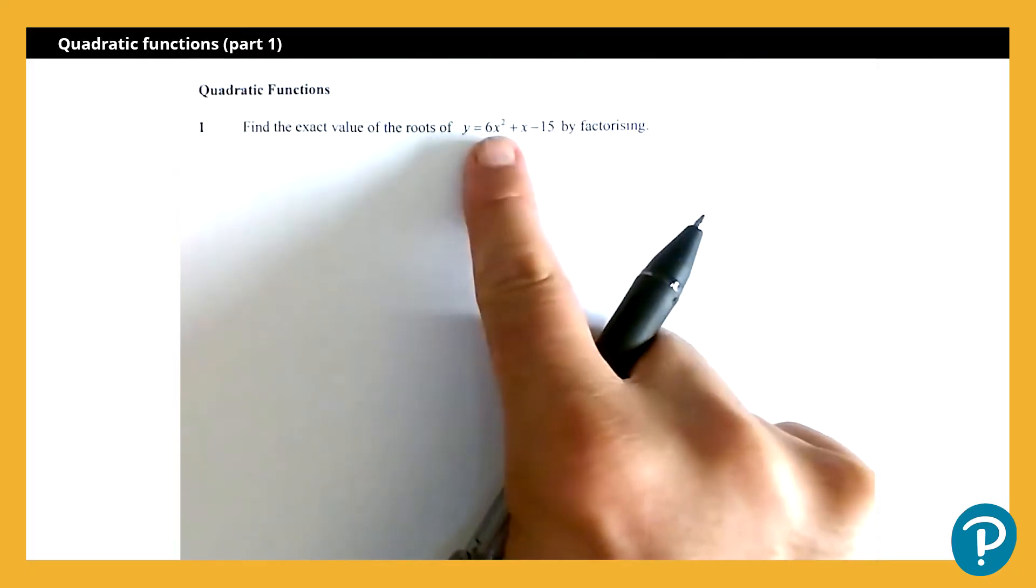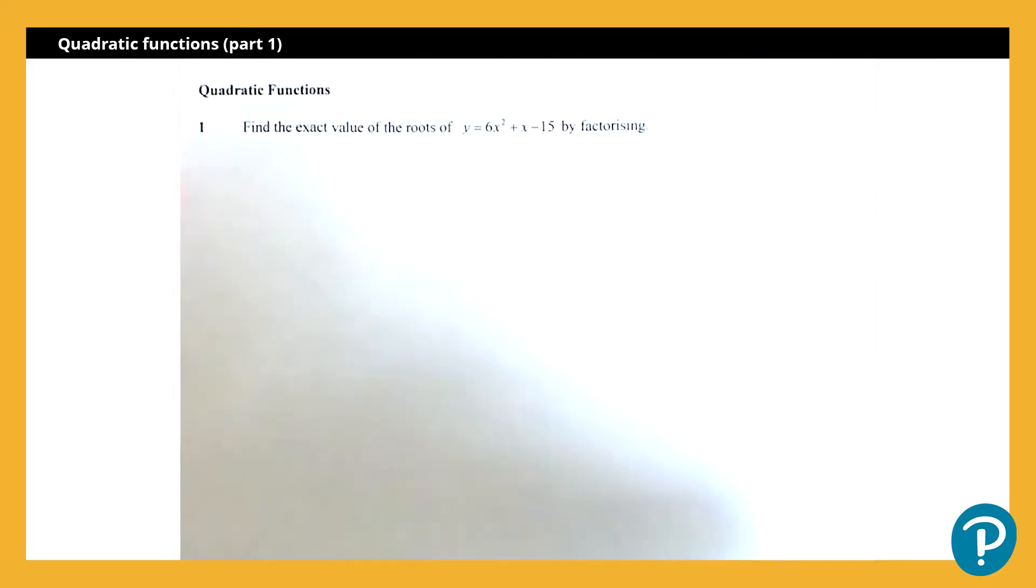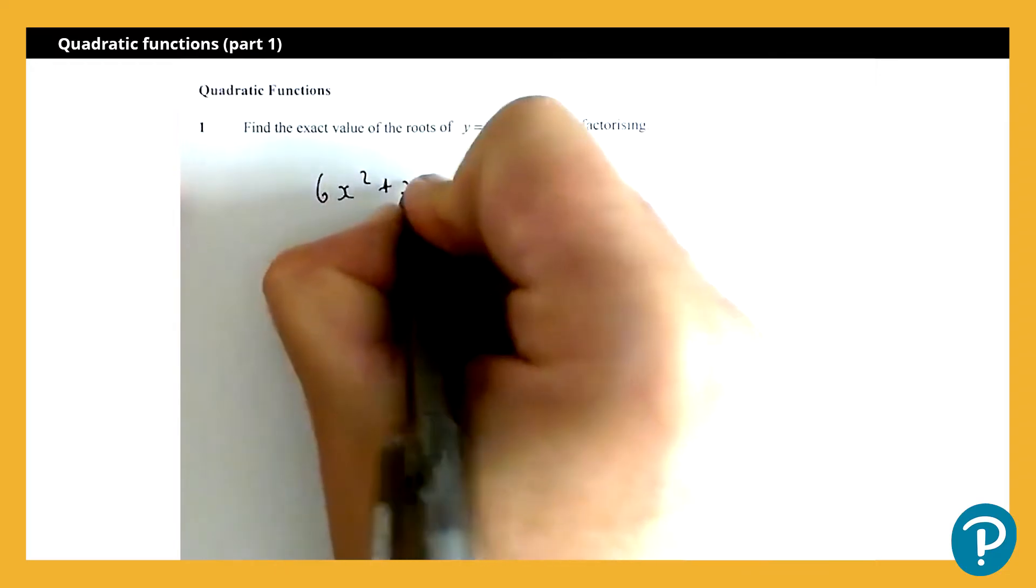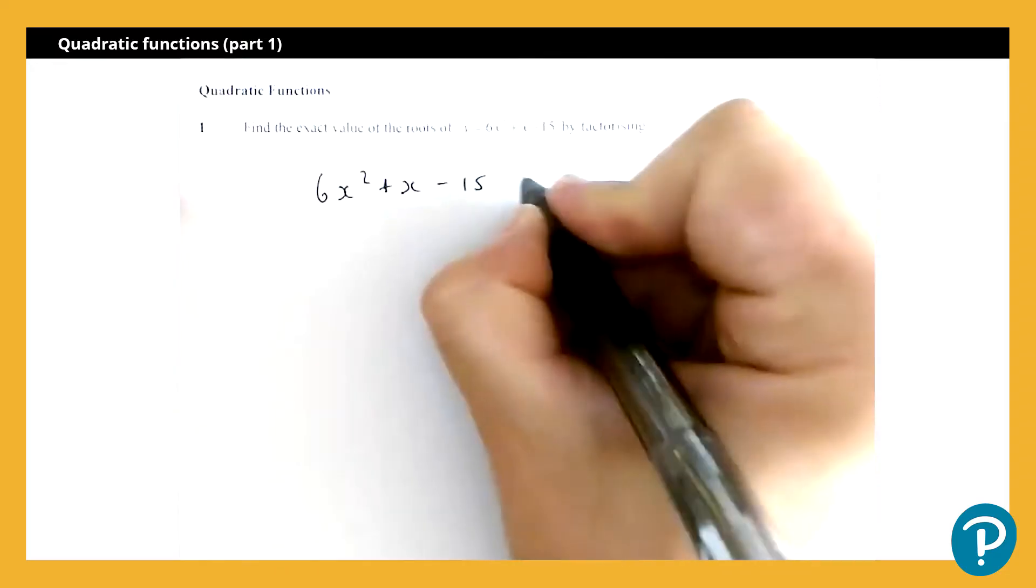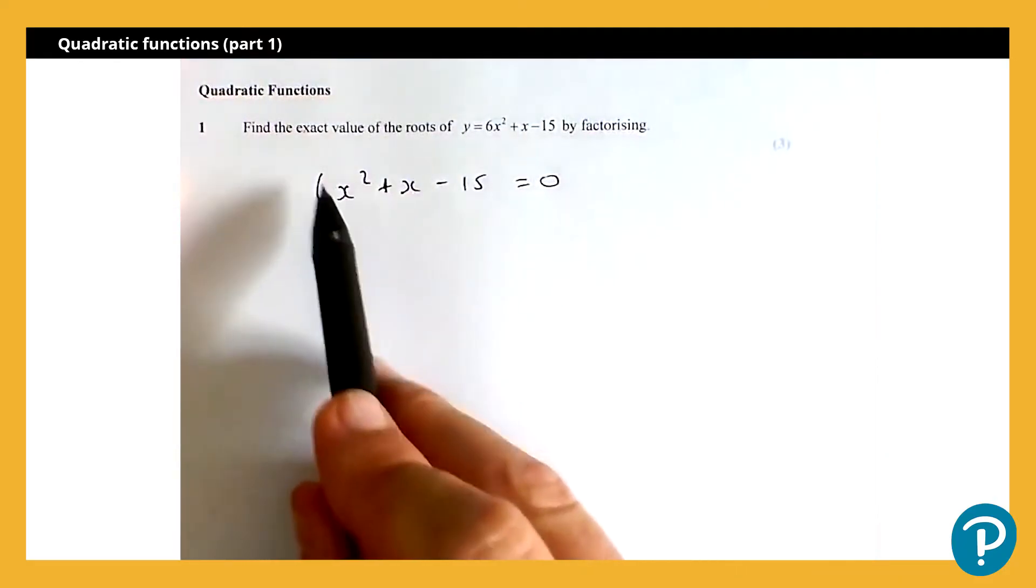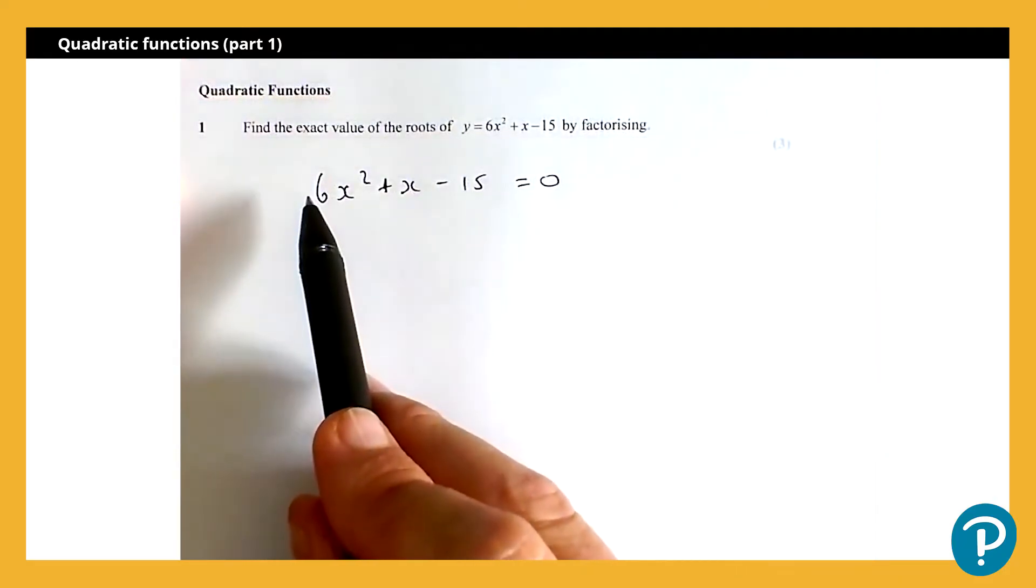The roots are obviously when this function here is equal to 0. We'll start by writing that out, so I've got 6x squared plus x minus 15, and we're looking for when that is equal to 0. Now when we have one of these harder quadratics, so the coefficient of x squared is not 1.